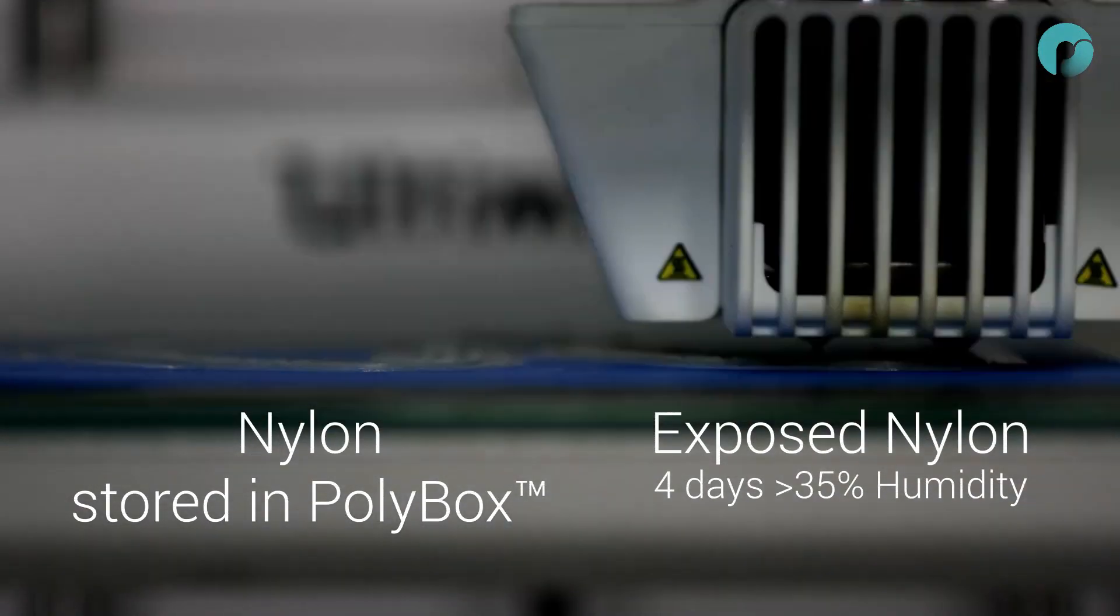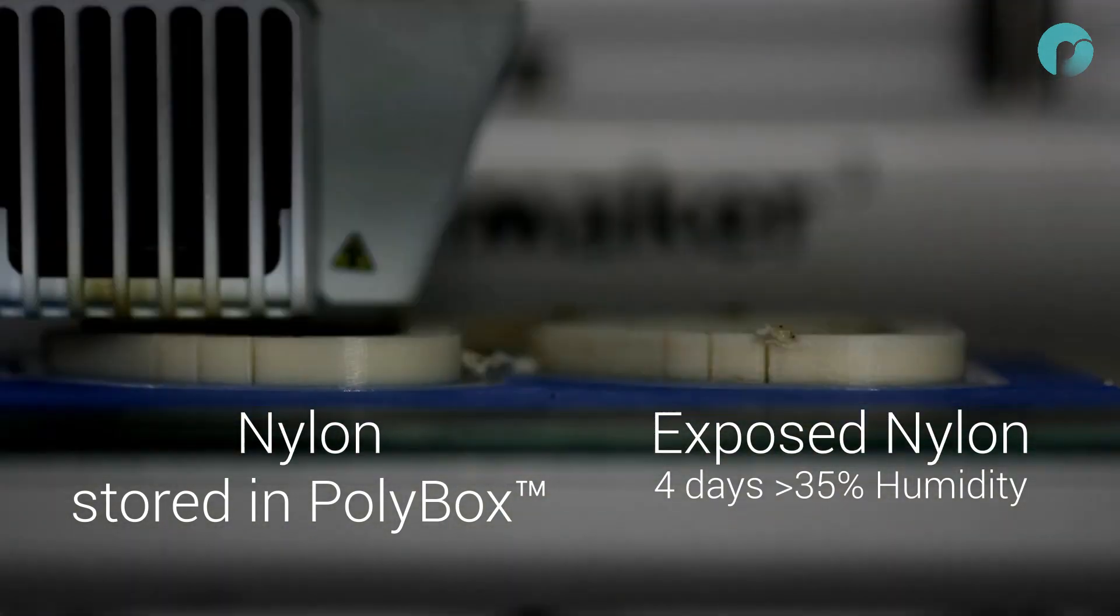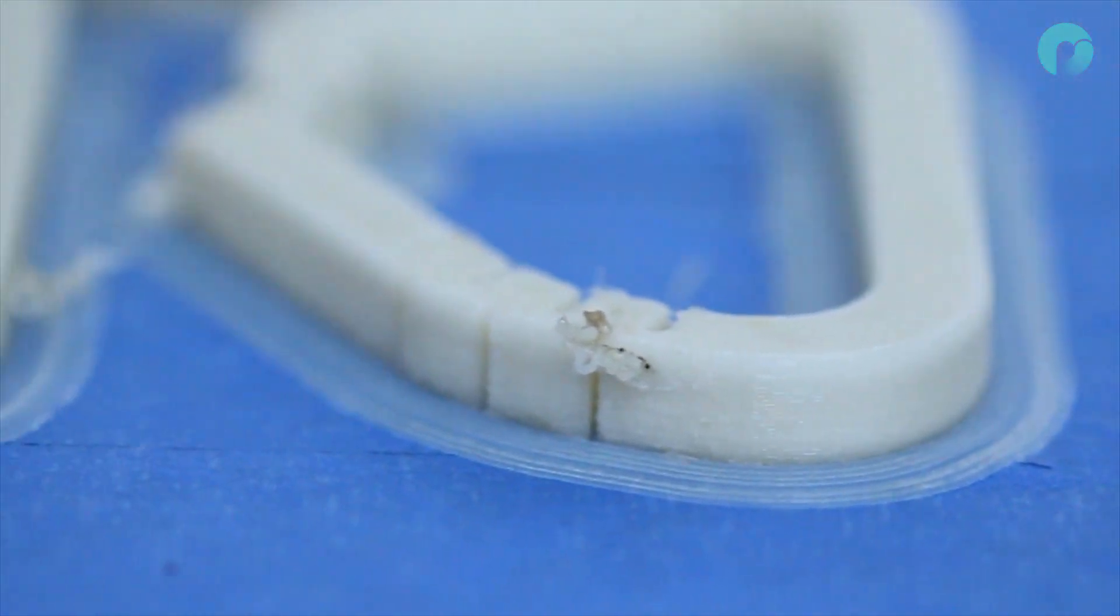In this test, we are printing two carabiners in nylon. Through the right extruder, the nylon has been exposed to over 35% humidity for 4 days, and feeding through the left is nylon stored in the Polybox.